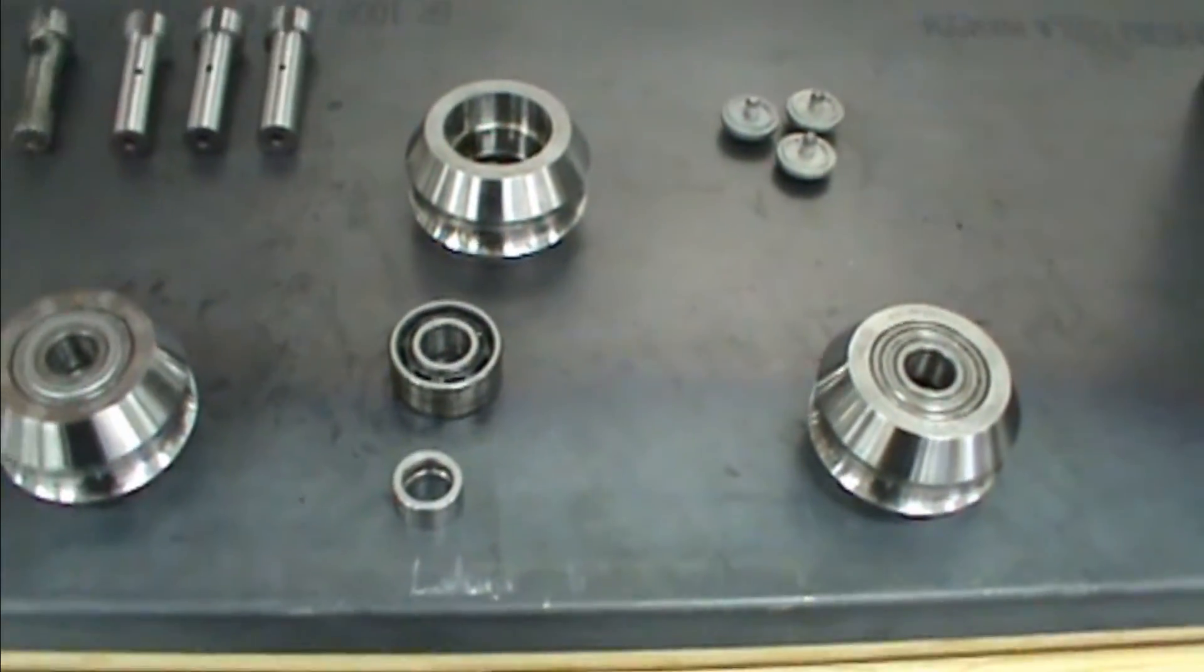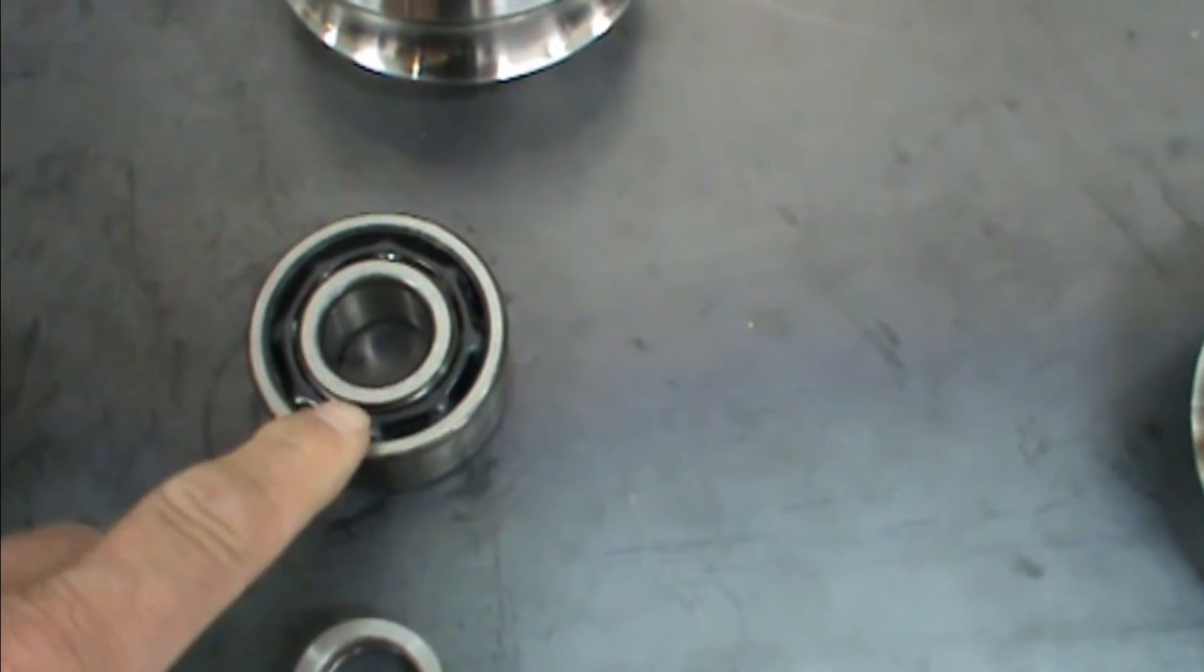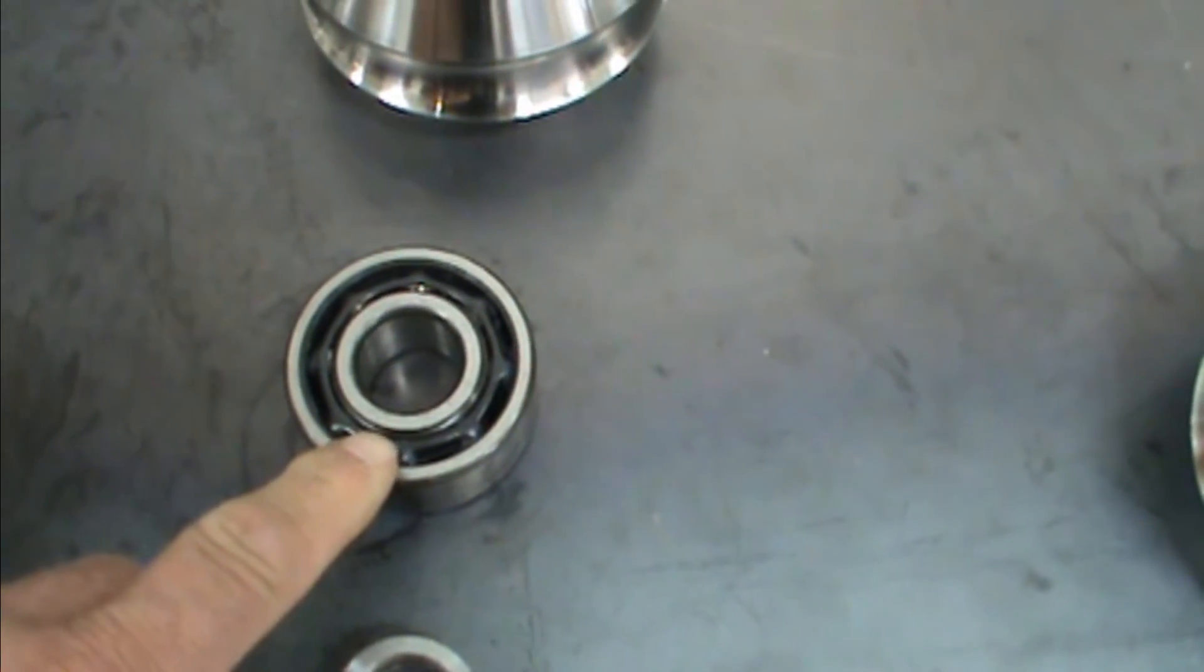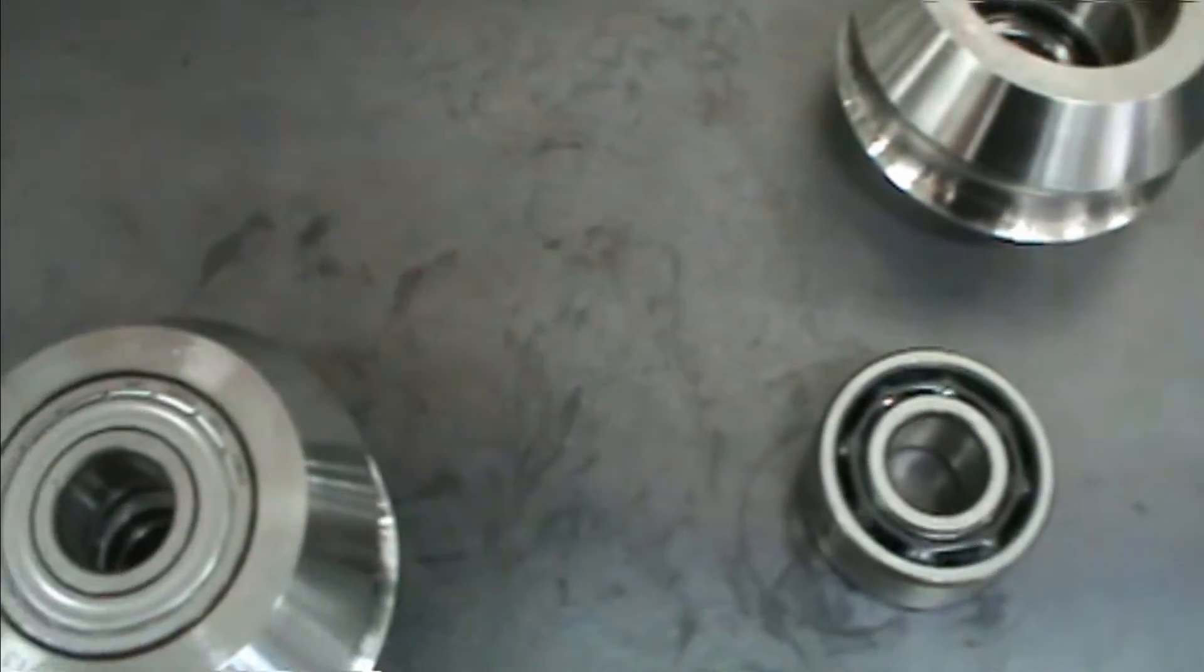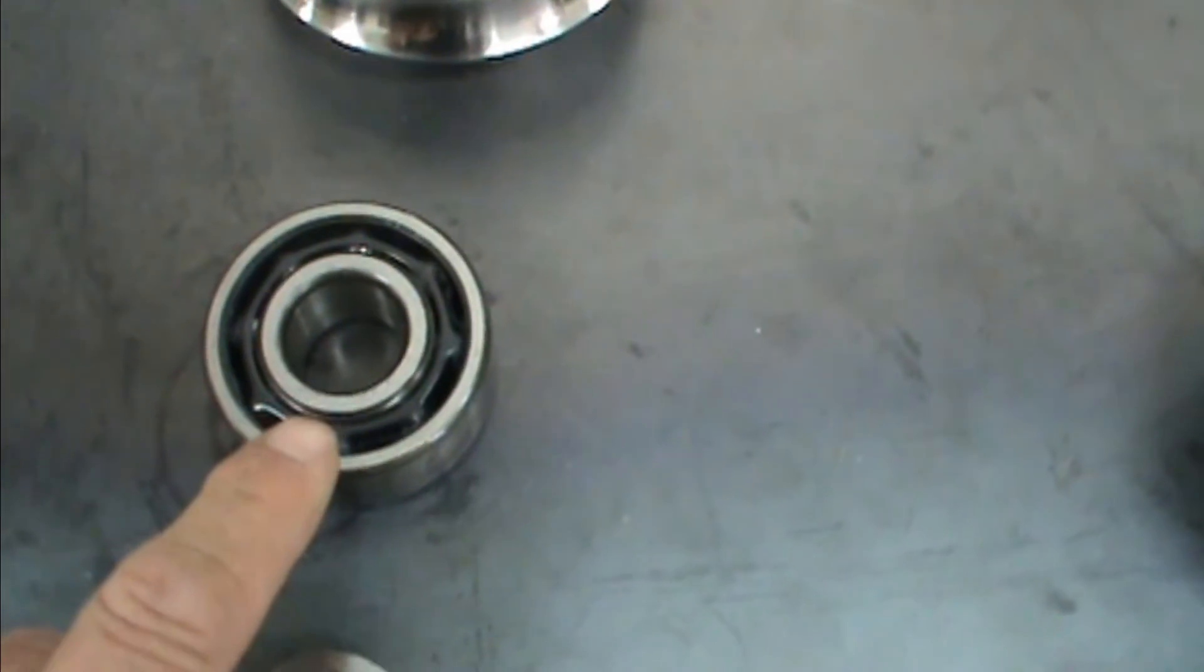Check the weld rolls. If they have sealed bearings, make sure that the sealed bearing has the shield removed on the inside so they can be greased. The shield wants to be on the outside only, removed on the inside.